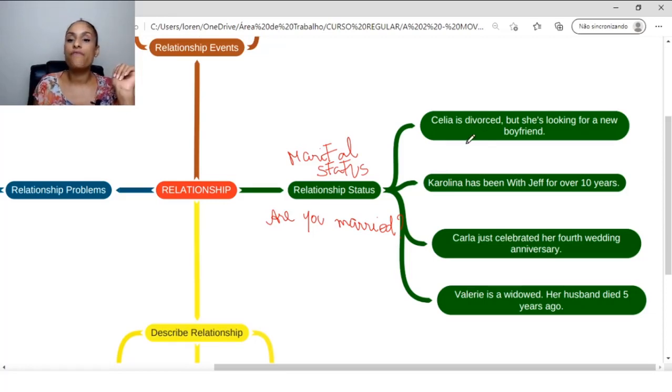Célia is divorced. They separated. But she's looking for a new boyfriend. She's divorced, but she's looking for a new boyfriend. So, looking for is searching. Célia, she is divorced, but she is looking for a new boyfriend.